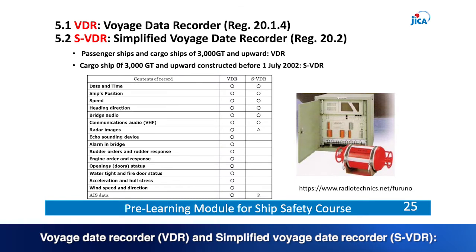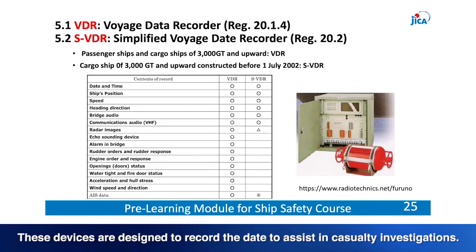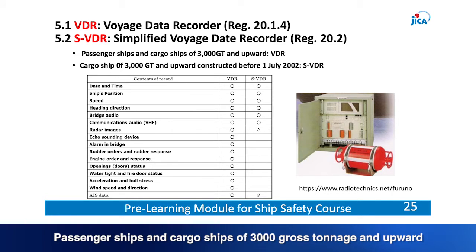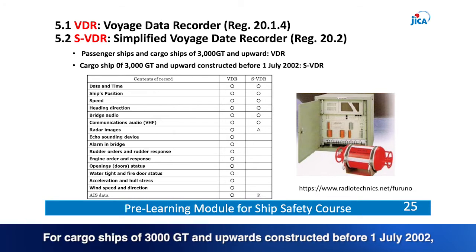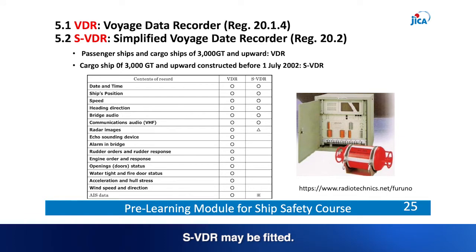Voyage Data Recorder (VDR) and Simplified Voyage Data Recorder (SVDR) are designed to record data to assist in casualty investigations. Passenger ships and cargo ships of 3,000 gross tonnage and upward constructed on or after 1st July 2002 shall be fitted with VDR. For cargo ships of 3,000 gross tonnage and upward constructed before 1st July 2002, SVDR may be fitted.